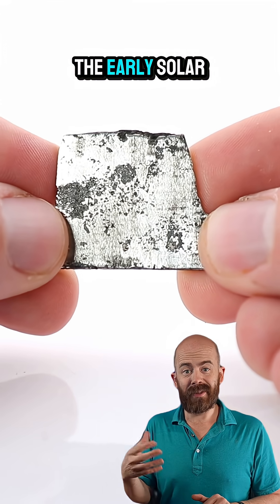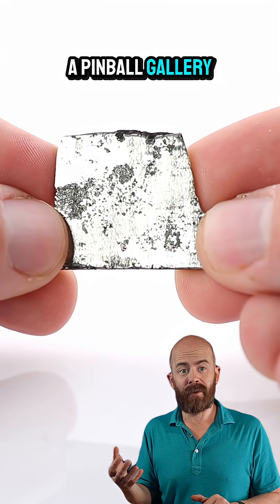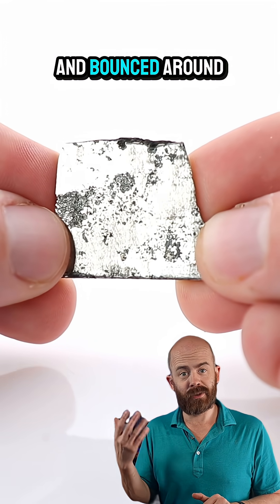What we do know is that the early solar system was something of a pinball gallery as things collided frequently and bounced around all over the place.